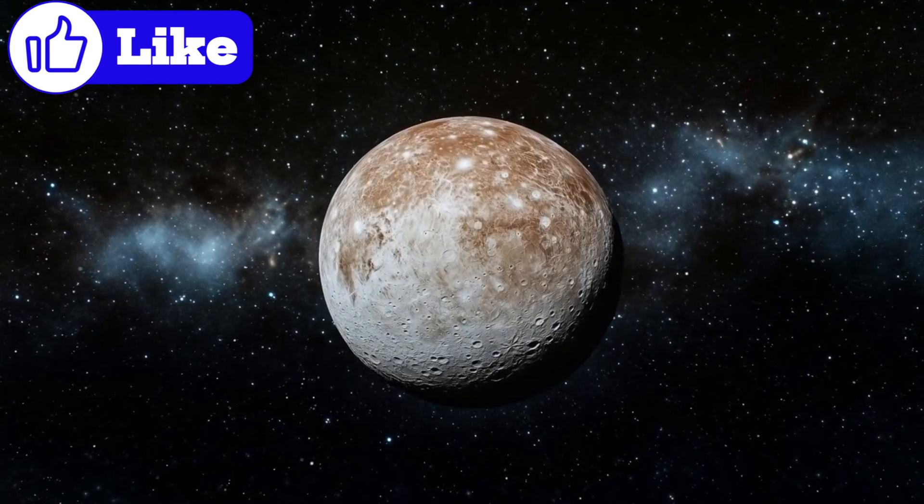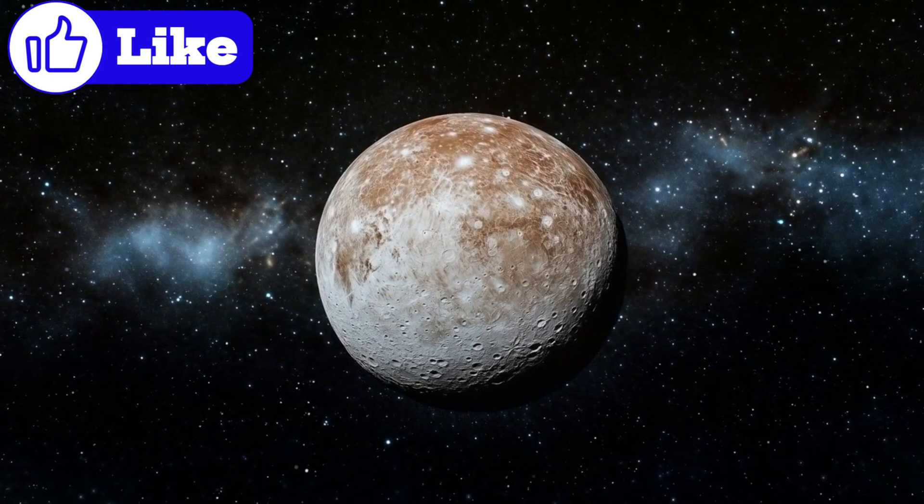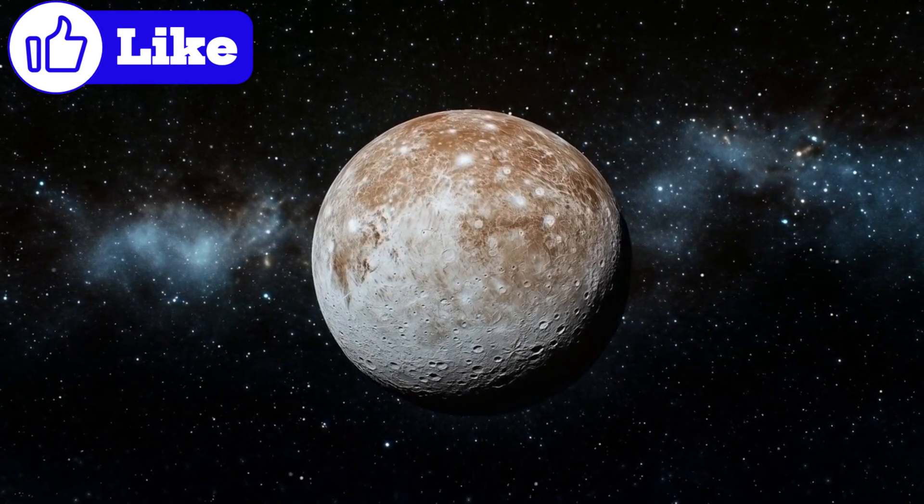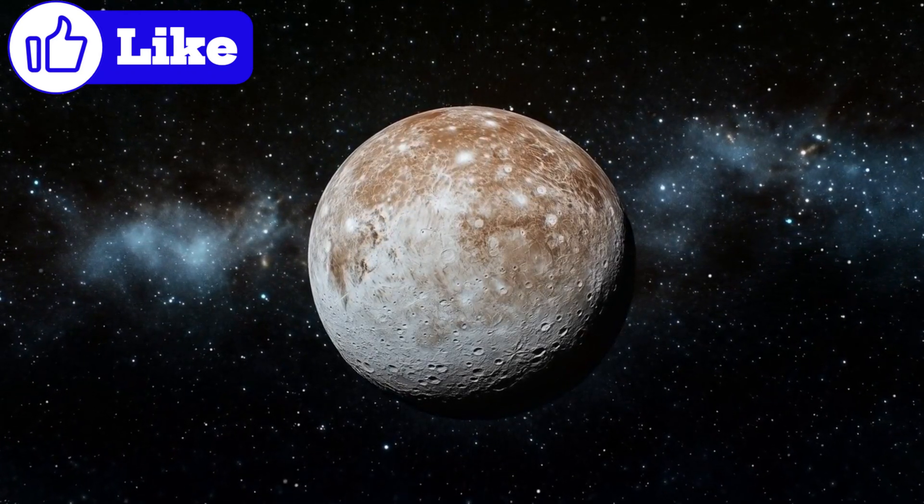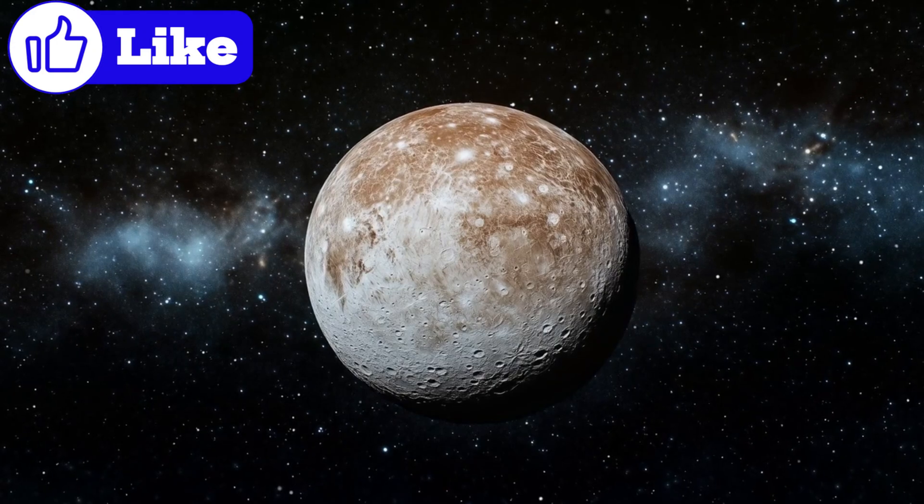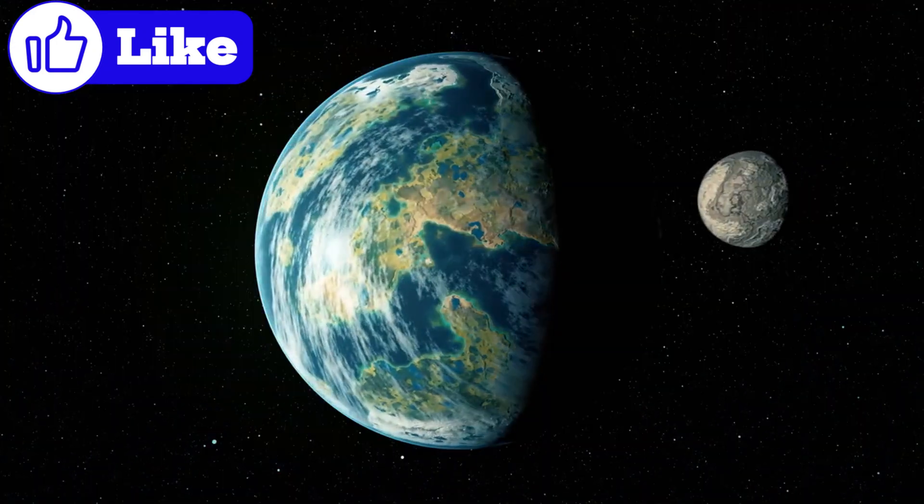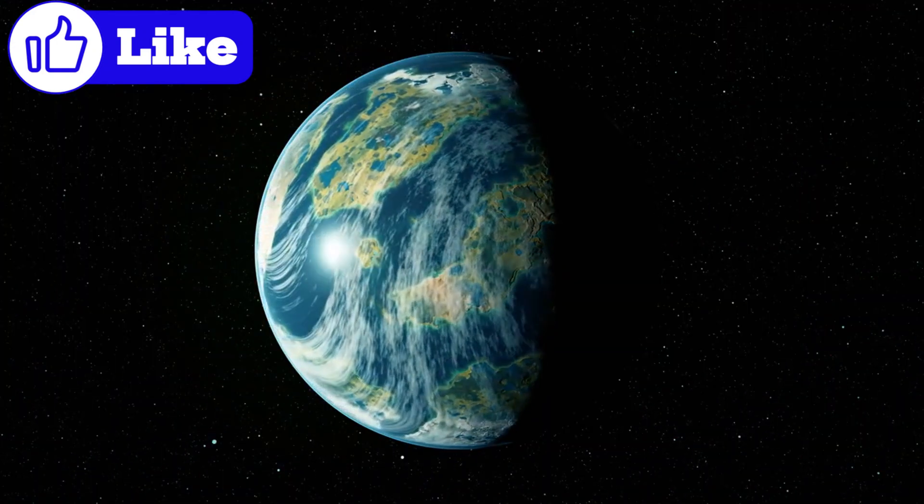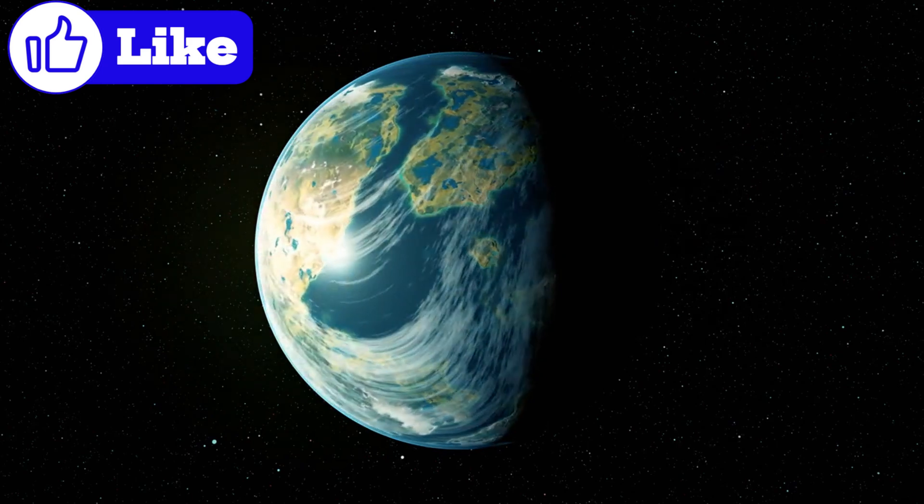Furthermore, if these planets have moons akin to Europa or Enceladus, with subsurface oceans beneath icy crusts, these satellites could serve as potential habitats for life in an otherwise inhospitable universe. The prospect of life on the jumbos or their moons introduces an entirely new dimension to this discovery, igniting questions about the diversity of habitable environments across the cosmos.